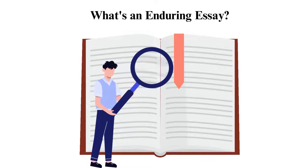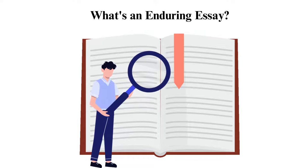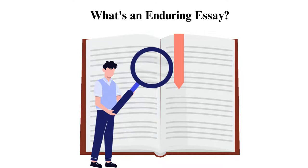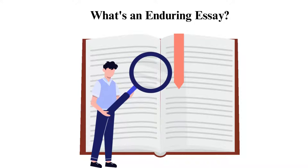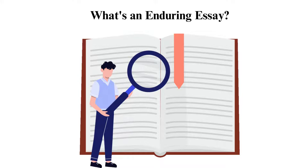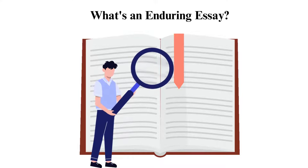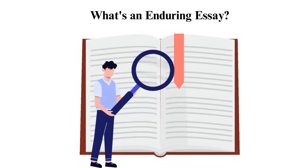There are many Enduring Issues in society that you can discuss, but you should choose the best that will give more discussion points and one that cuts across the population. How do you identify an Enduring Issue in Global History? First, choose an issue based on historical accuracy and interpretation of three documents.